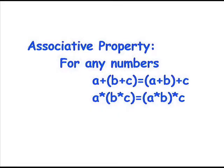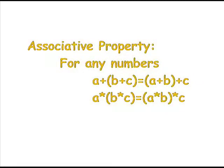Moving on to associative. Associative property: for any numbers, a plus b plus c equals a plus b plus c, or a times b times c equals a times b times c. This works for both addition and multiplication.